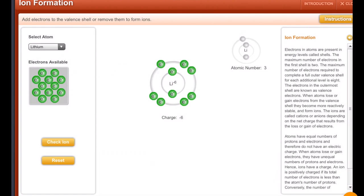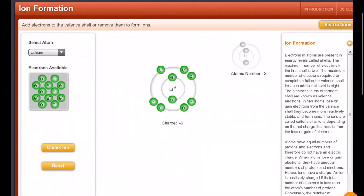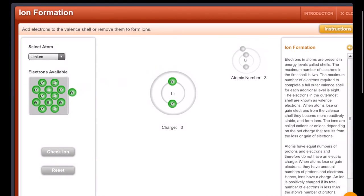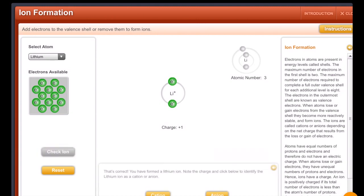So I'm going to remove and think about this again. And actually, I'm going to click reset, because that was faster. So that was this button here in the bottom left. So instead of adding seven, if I remove one, and it says check ion here, that's correct. You have formed a lithium ion. Note the charge and click below to identify the lithium ion as a cation or anion.